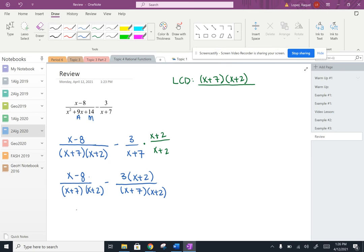Now I'm going to write this as one fraction. So I'm going to write this as x minus 8 minus 3 times x plus 2, all over x plus 7 times x plus 2.